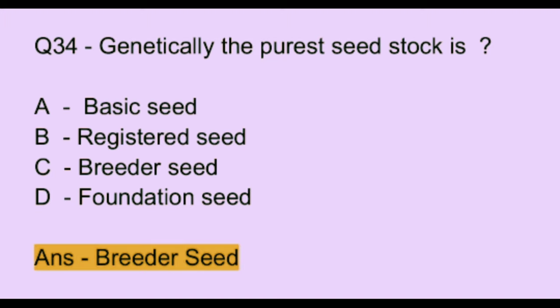Question number 34. Genetically, the purest seed stock is: Option A: basic seed. Option B: registered seed. Option C: breeder seed. Option D: foundation seed. The correct answer is option C, which is breeder seed.